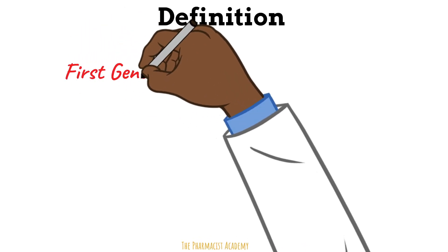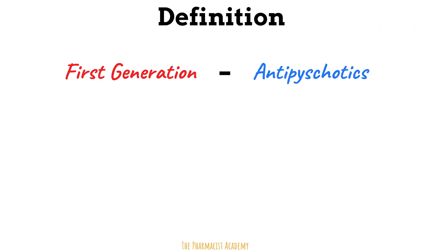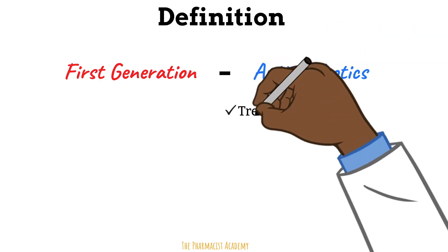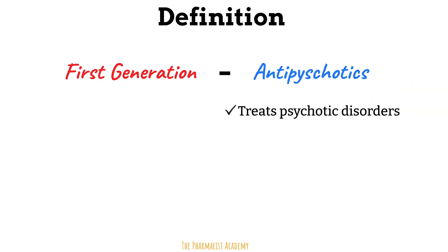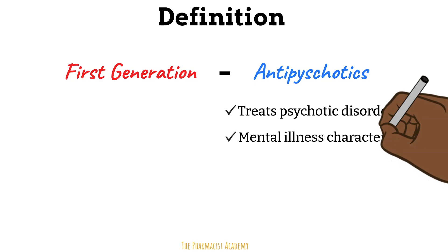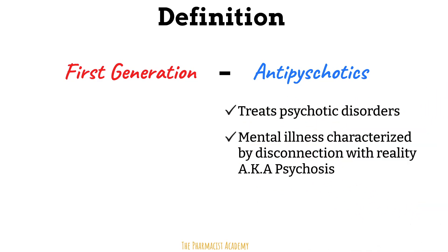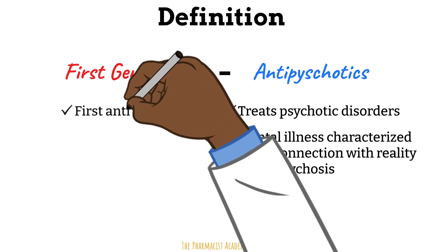Let's begin by breaking down the term first-generation antipsychotics. The antipsychotic part simply means that these drugs are used to treat psych disorders — a condition that affects the brain, causing a person to lose touch with reality and have abnormal perceptions and thinking, sometimes referred to as psychosis. The first-generation portion helps differentiate these from second-generation antipsychotics, which have slight differences in indications, mechanism, side effects, and efficacy. The first gens were the first group of antipsychotics to be developed.